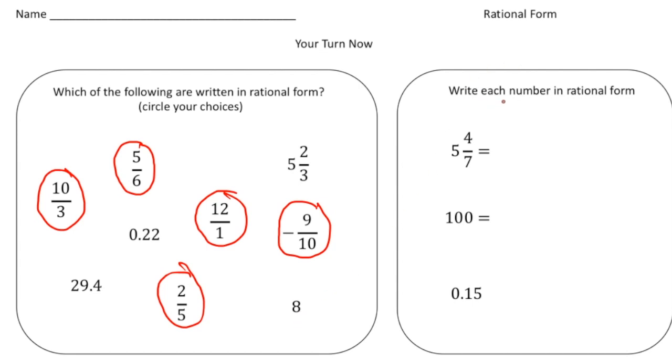And then for these, you had to write each number in rational form. So 5 and 4 sevenths, well to make this rational form, it's got to be an improper fraction. So 7 times 5 is 35 plus 4 is 39. So 39 sevenths, that's the answer for that one.